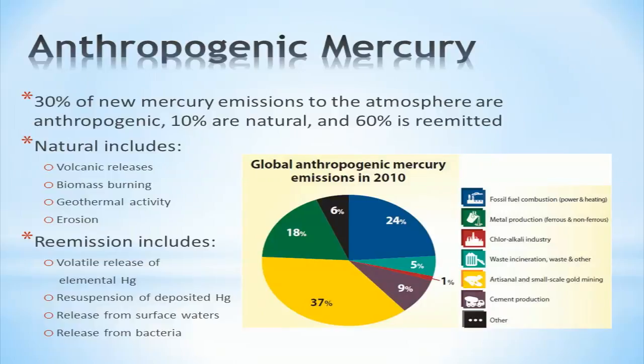The other 70% stems from natural sources and re-emission of deposited mercury back into the atmosphere. Re-emission accounts for both anthropogenic and natural sources, as it is unclear of the origins of re-emitted mercury. Natural sources include volcanic releases, burning of vegetation, release from geothermal activity, and erosion.